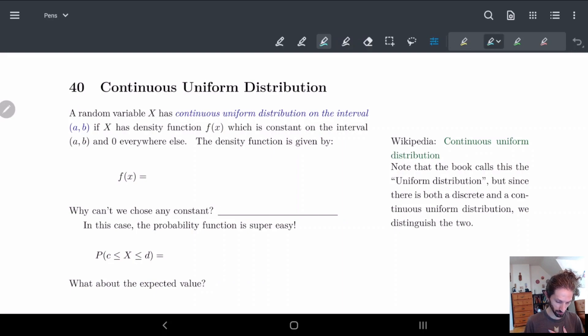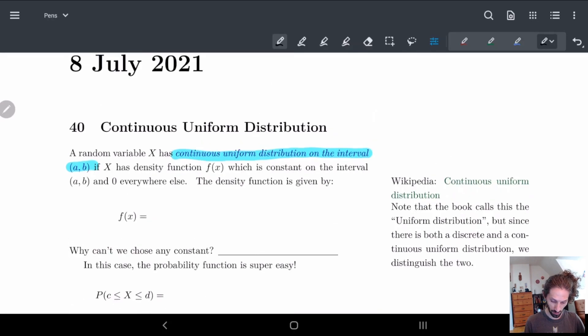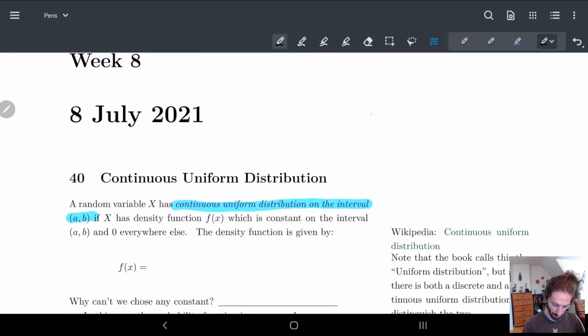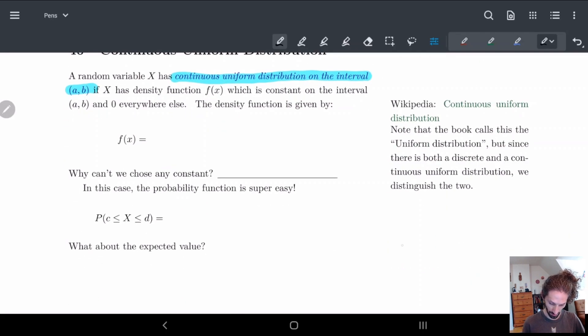So the continuous uniform distribution is just going to be a distribution that's constant. Remember how last week we were talking about a continuous distribution. So continuous distributions if you recall are going to have some function f(x) and these are going to be looking at some intervals a to b and this is how we were defining our continuous distribution. So in our case our f(x) is just going to be some constant.